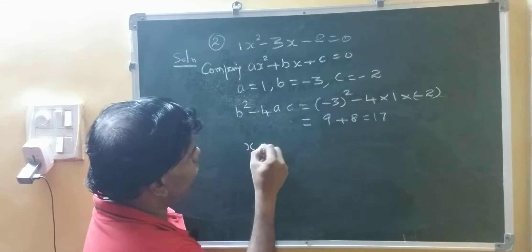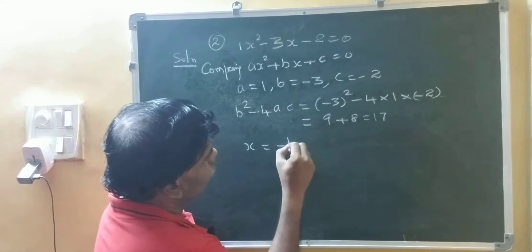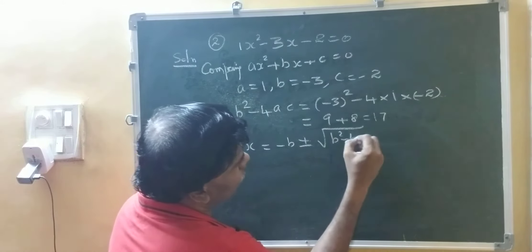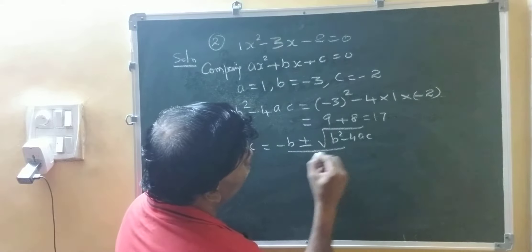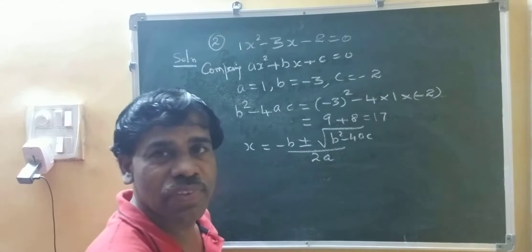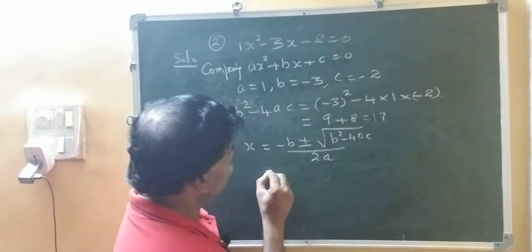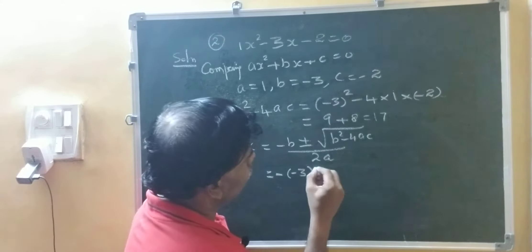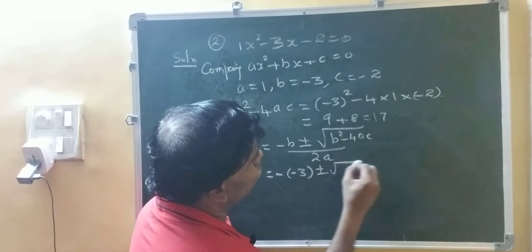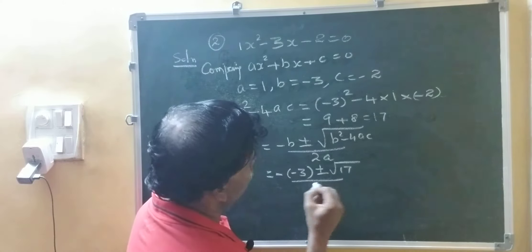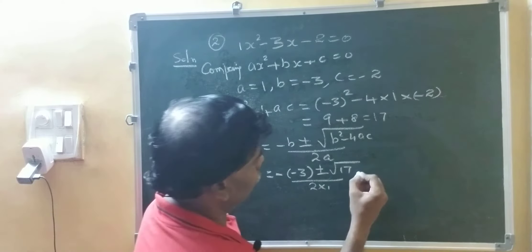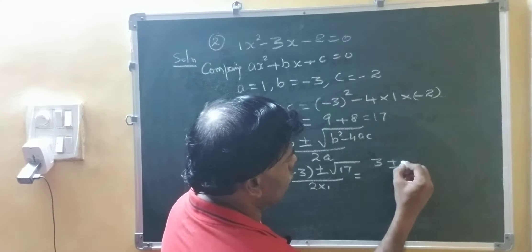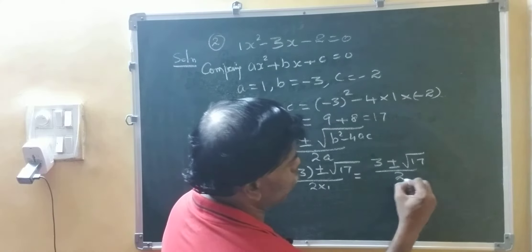Now, what is the formula? Minus b plus or minus root of b squared minus 4ac upon 2a. So we get minus minus 3 — be very careful with the signs — plus or minus square root of 17 upon 2 into 1, which equals 3 plus or minus square root of 17 upon 2.